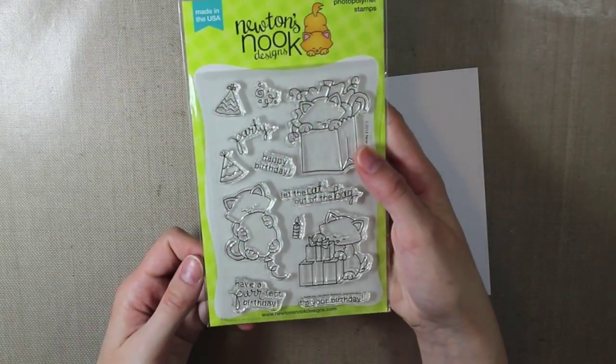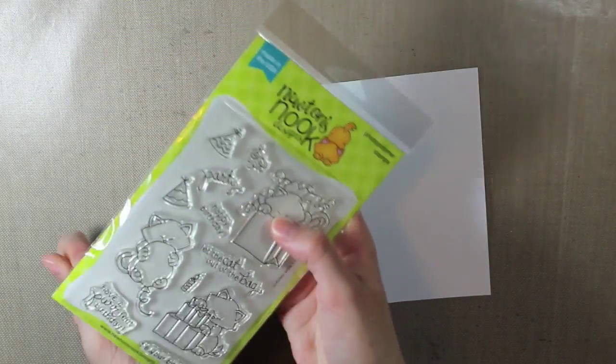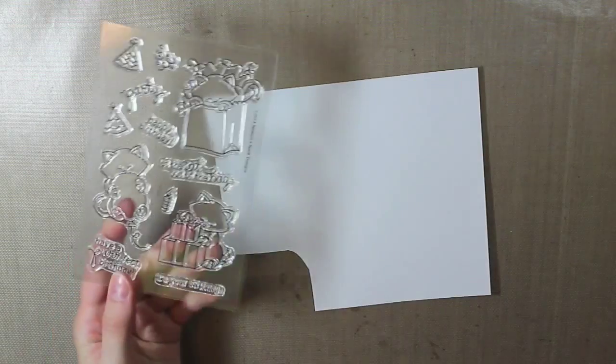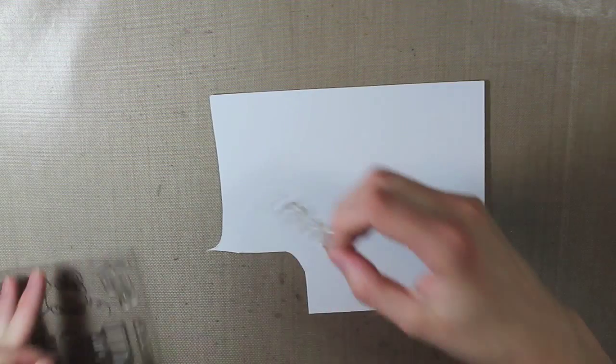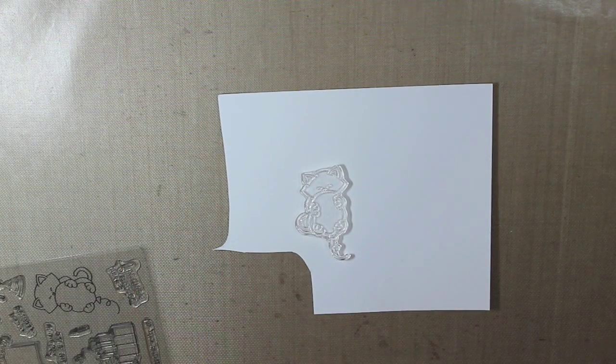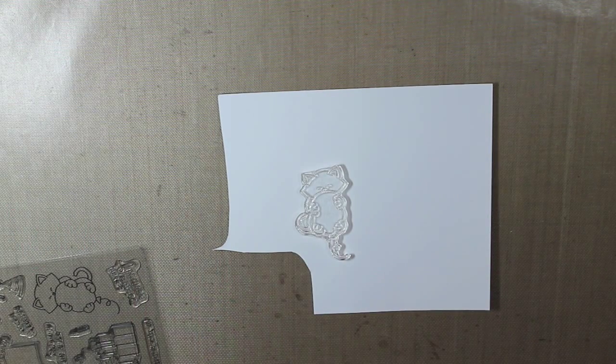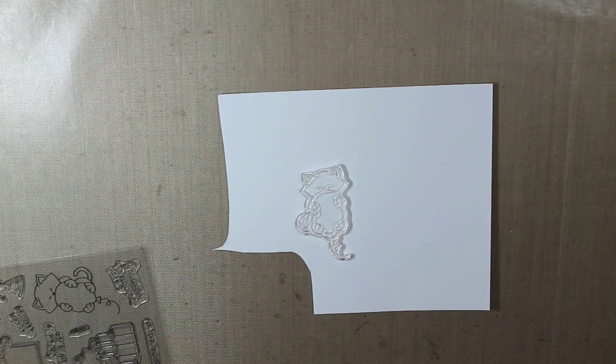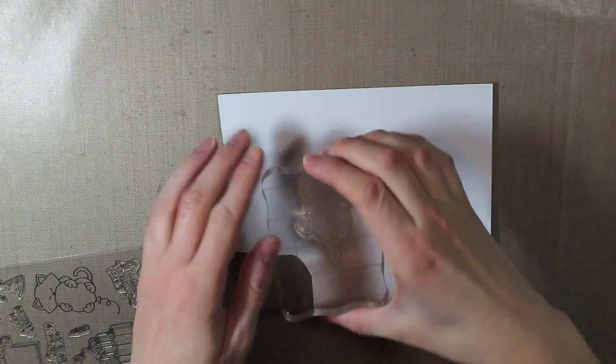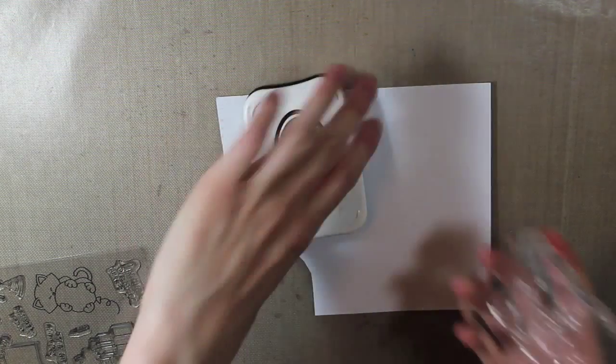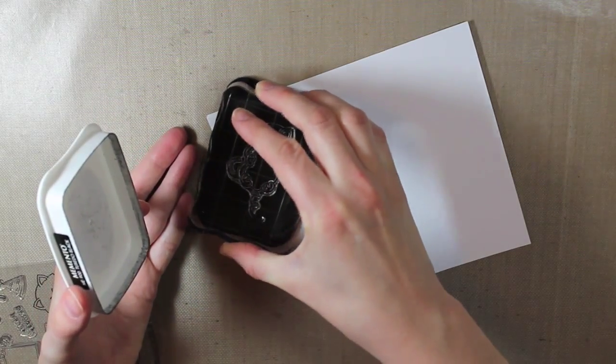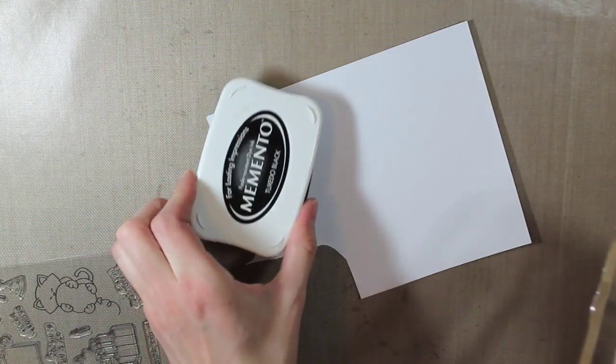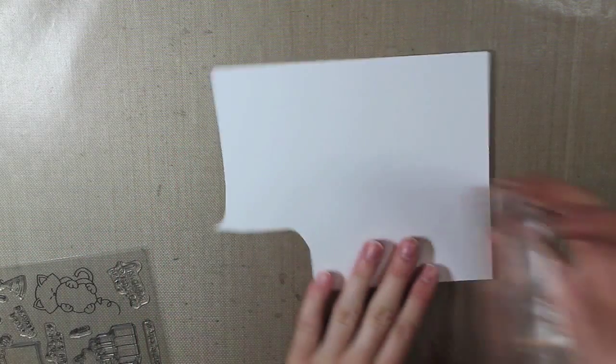And then I'm using the Newton's Nook Newton's Birthday Bash stamp set and I'm going to stamp the little cat that's holding the balloon with my Tuxedo Black Memento ink. And I'm stamping this on a piece of Neenah's 110 pound cardstock. So go ahead and put that on my clear acrylic block and then ink that up really well and then I can stamp that on my cardstock.